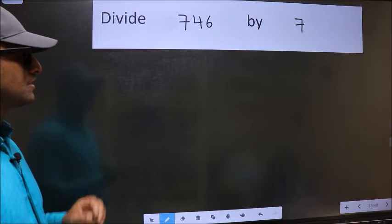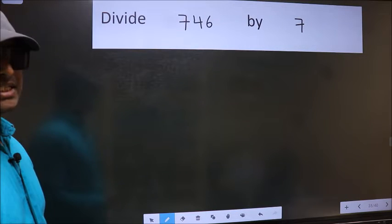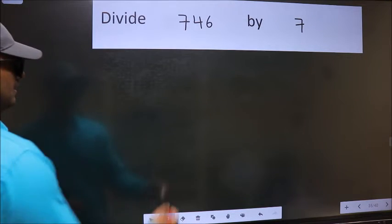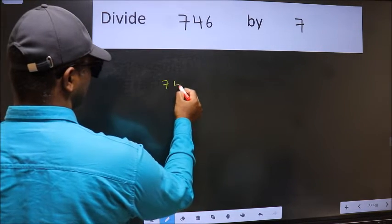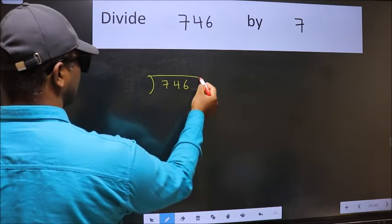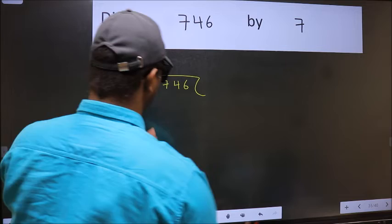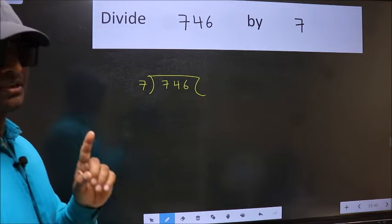Divide 746 by 7. To do this division, we should frame it in this way: 746 here and 7 here. This is your step 1.